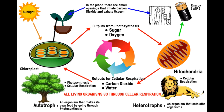Chloroplast absorbs the sunlight, and the plant goes through a process called photosynthesis, where small openings in the leaf called stomata inhale carbon dioxide and exhale oxygen. When the stomata do this, they are going through the process of photosynthesis. They let out oxygen and sugar.